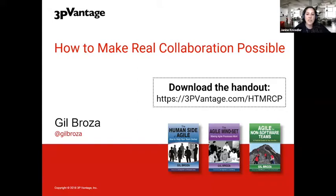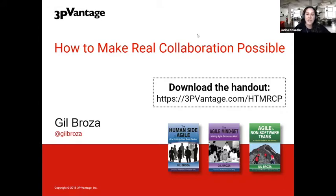Gil Browser is a seasoned Agile host, facilitator, trainer, speaker, manager, and developer with 20 years of experience in diverse environments and capacities. He owns and operates 3P Vantage and helps organizations increase agility and team performance. He has also written three books, including The Human Side of Agile. You may see them on his bookshelf. He has also told me that sometimes he likes a little thrill and has walked on the edge of a sea tower at 1,100 feet off the ground.